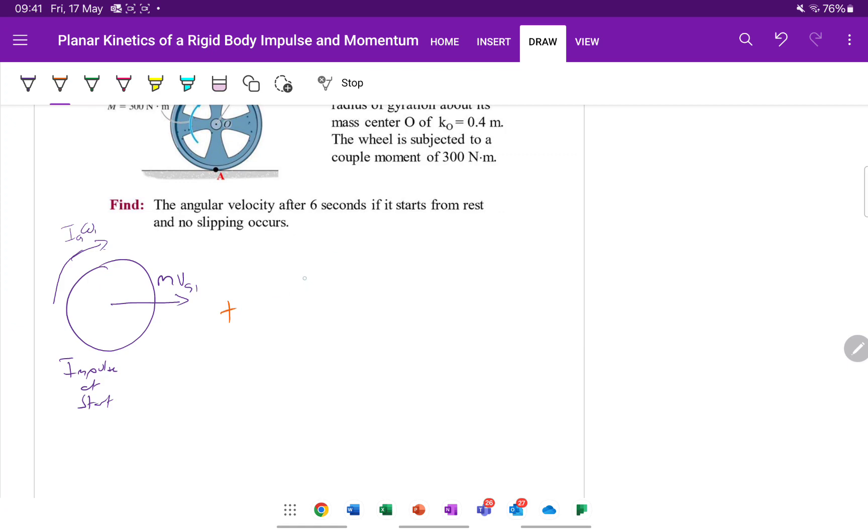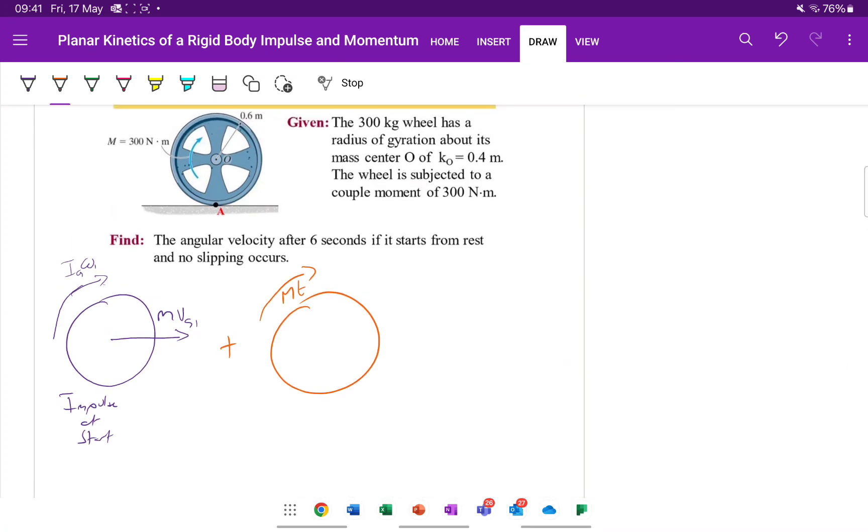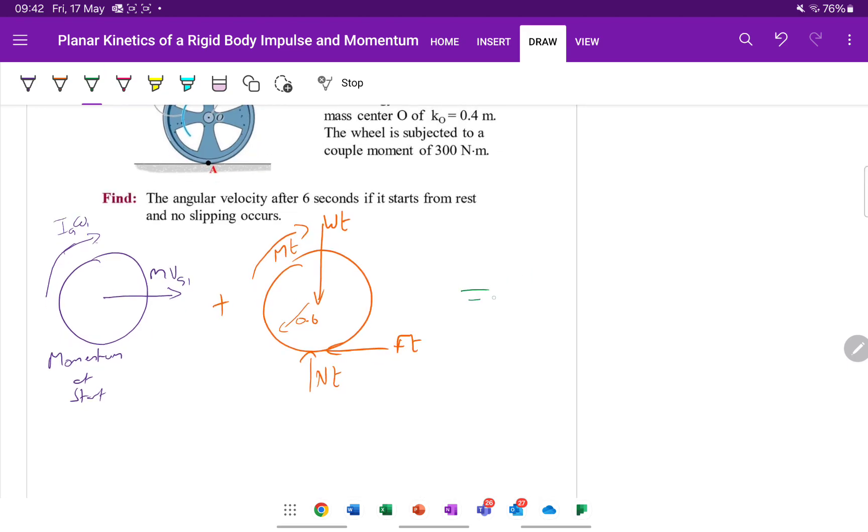In my second diagram, we're going to have a moment being applied for a time. You can, I'm going to correct my notation in a minute because clearly that is not impulse, is it? That is momentum. That's the momentum at the start. So linear momentum, angular momentum at the start. Moment being applied for a time is an impulse. I've got my weight acting for a time. I've got my normal force acting for a time. And I've got my friction force acting for a time. And they're a distance away, and that distance is 0.6. And that's going to create some new momentum. So let me put impulse there. That really is the impulses.